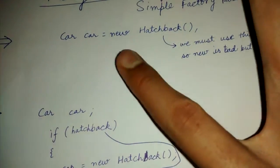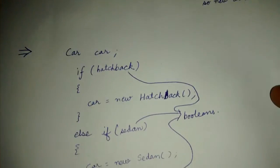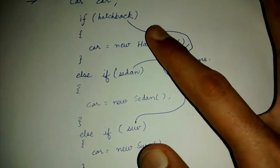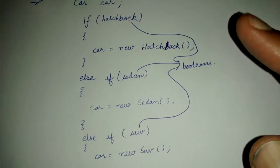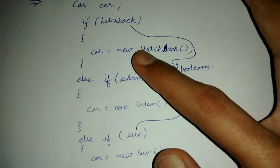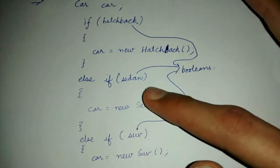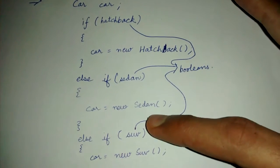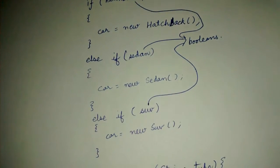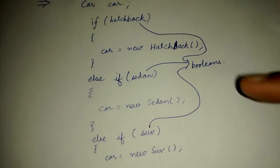We don't want to create a Hatchback class. Instead, we have kept three boolean variables: hatchback, sedan, and suv. If hatchback boolean is true, then only we create a hatchback. Otherwise, if sedan boolean is true we create a sedan. Otherwise, if suv boolean is true we create an suv. These booleans help us to decide which of the cars to create.